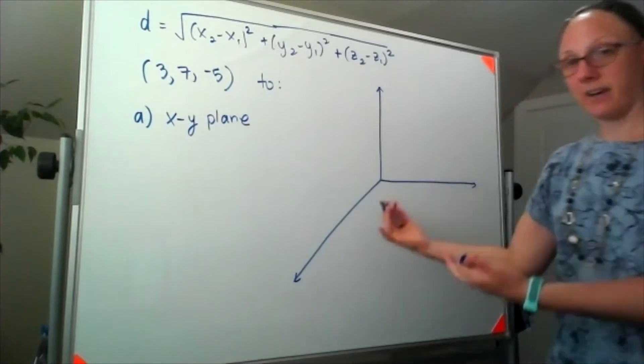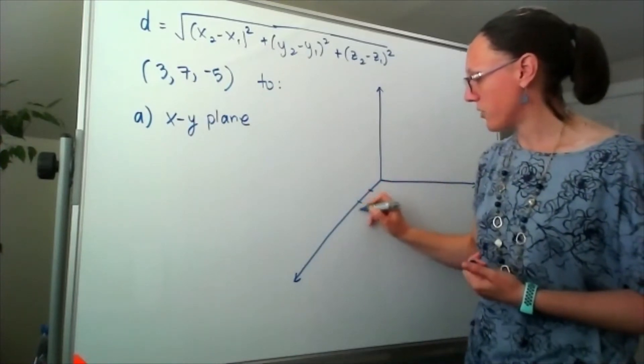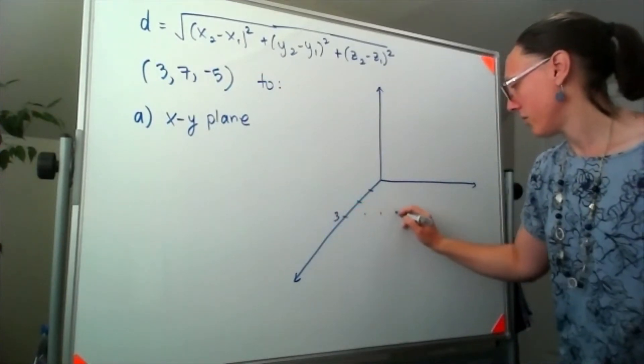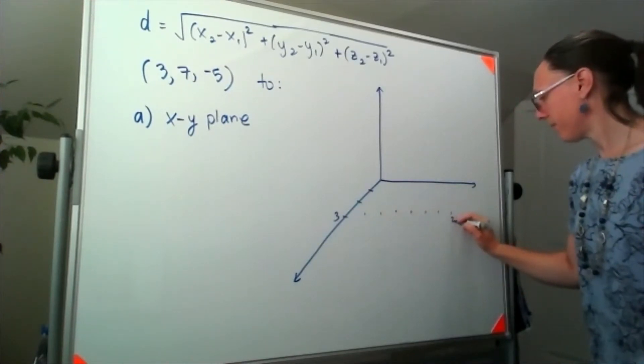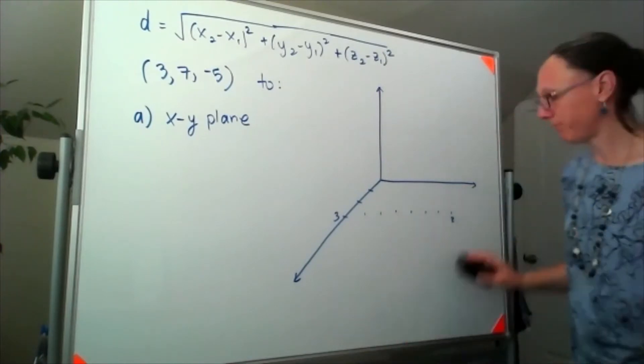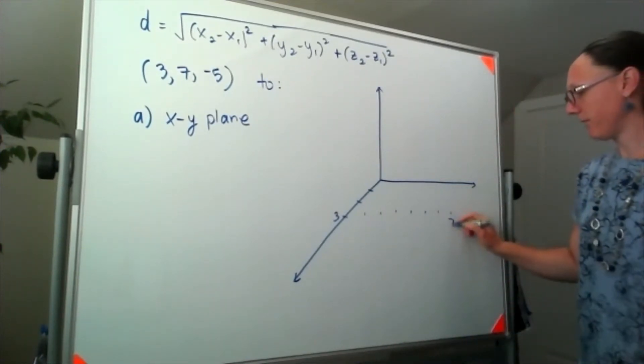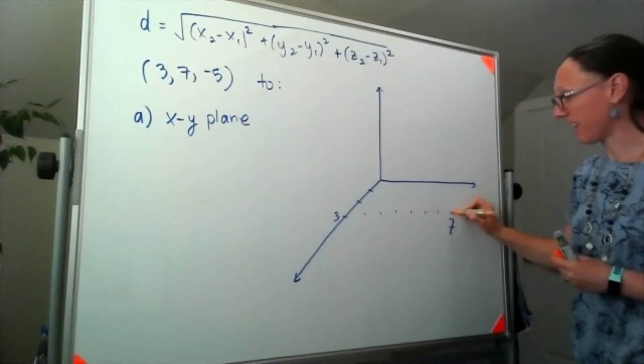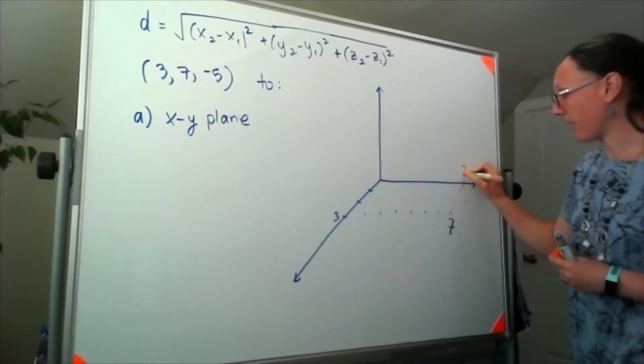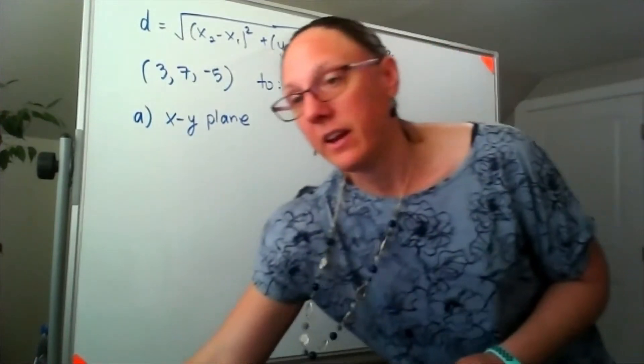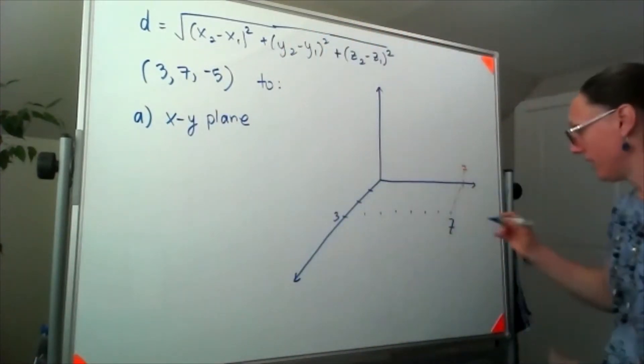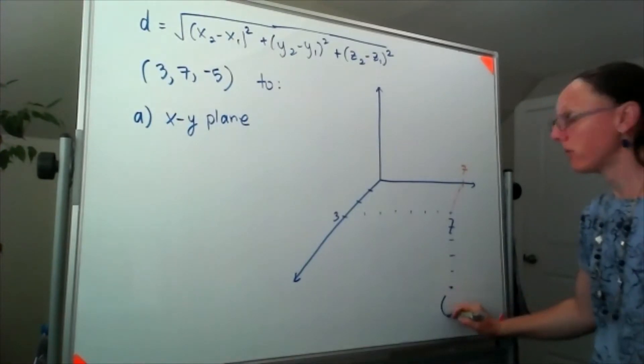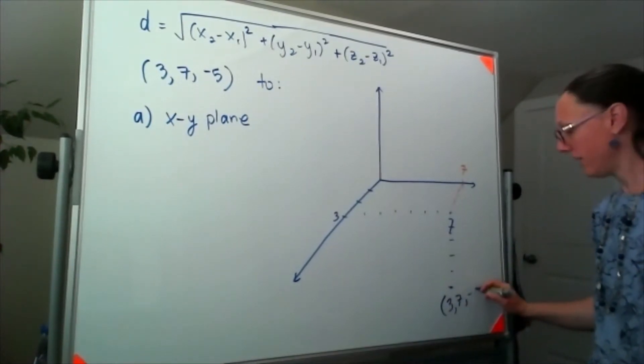But if I wanted to plot that point, I'd come out 3, so 1, 2, 3, and then I need to take 7 steps to the right - oh, I wrote a z, I meant a 7, that's a 7 - so if I make myself a little dashed line back to here, that would hit 7 on the y-axis, and then I need to go down 5, so 1, 2, 3, 4, 5. So I am now at the point 3, 7, negative 5.